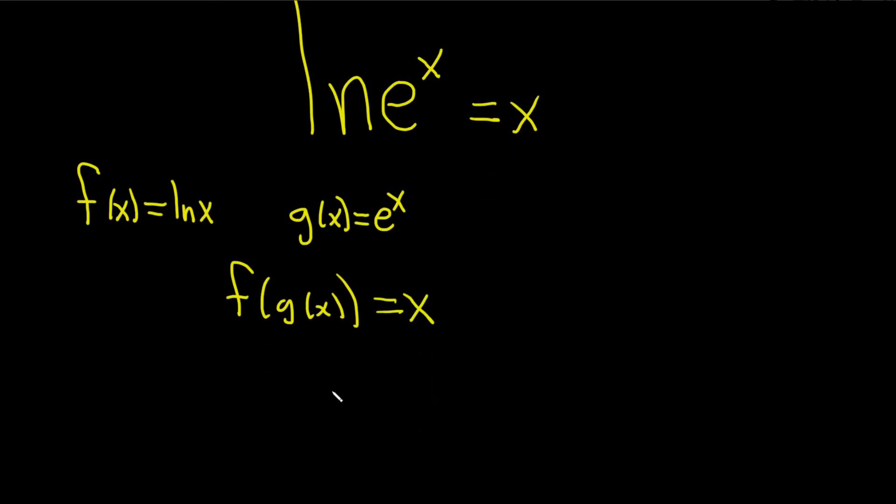Well what is g of x? It's e to the x, so this is f of e to the x, and this is equal to x. So f is the natural log of x. So f of e to the x is just the natural log of e to the x, and that's equal to x.